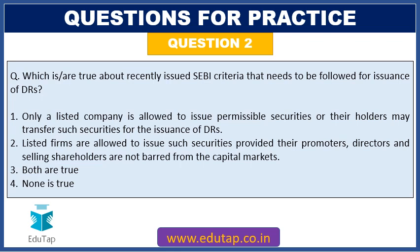The next question: which is true about the recently issued SEBI criteria that needs to be followed for issuance of depository receipts? Options are: (A) only a listed company is allowed to issue permissible securities or their holders may transfer such securities for the issuance of depository receipts; (B) listed firms are allowed to issue such securities provided their promoters, directors, and selling shareholders are not barred from the capital markets; (C) both are true; or (D) none is true.